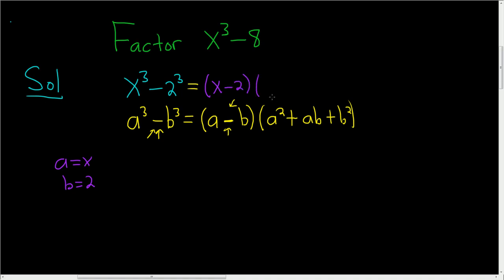Then we have a squared, so we get x squared, plus ab which is 2x, and then plus b squared, so plus 4, because b is 2 and 2 squared is 4. And that is the final answer.